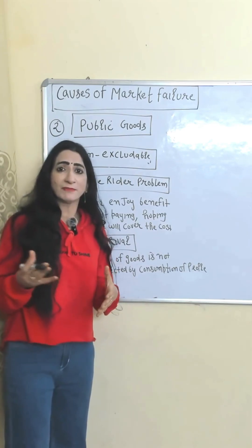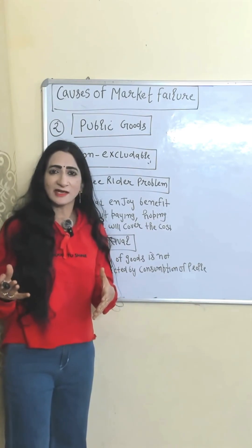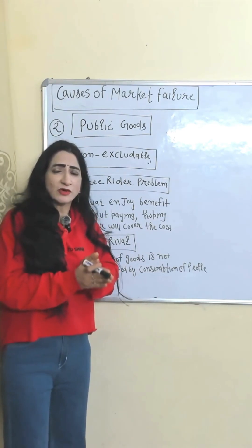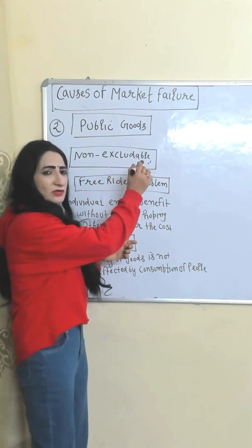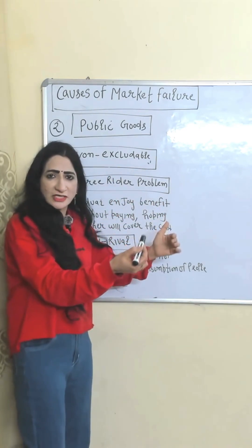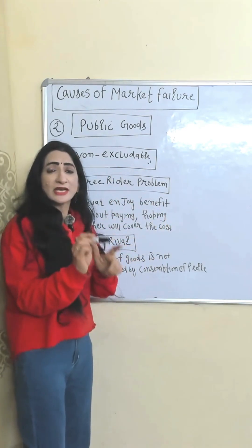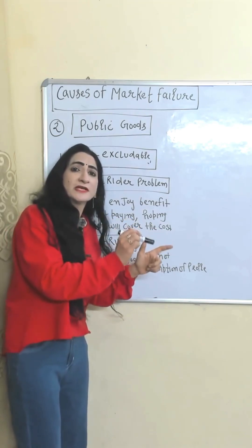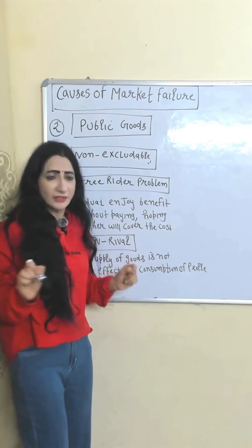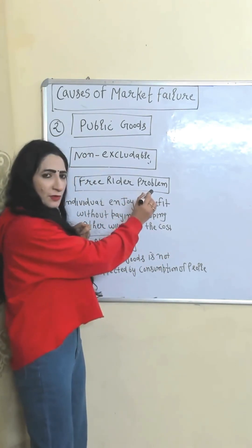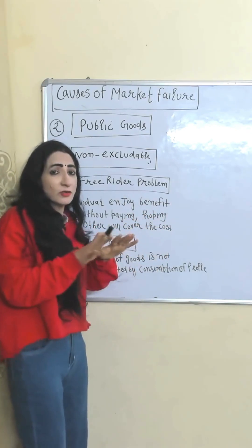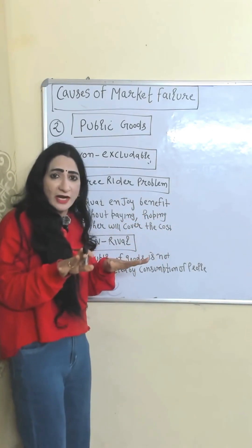Public goods are provided by the government, like public power, public roads, and national defense. Markets fail in the case of public goods because public goods are non-excludable — you cannot exclude anyone from using them. You cannot exclude people from using a public park whether they are paying taxes or not, which leads to the free rider problem, where people enjoy benefits without paying for them.